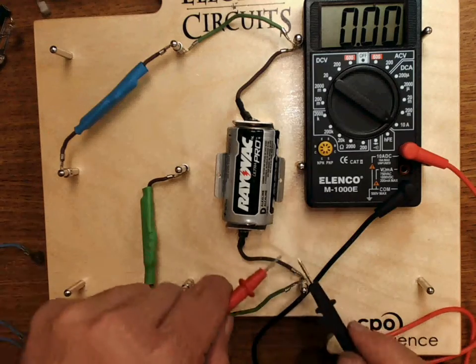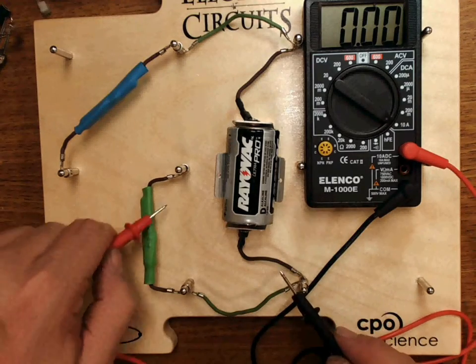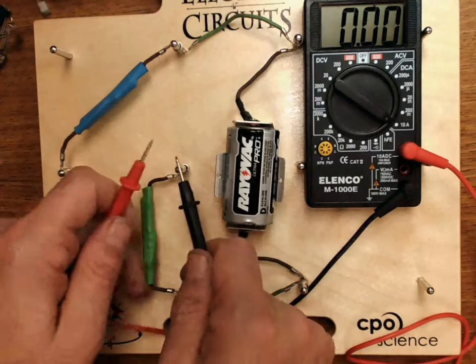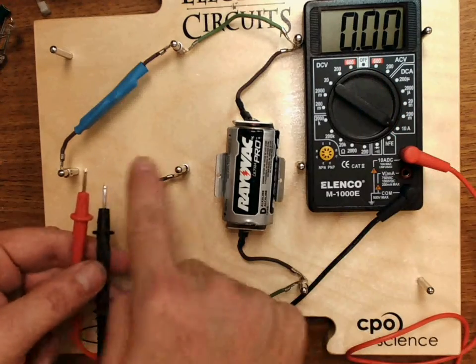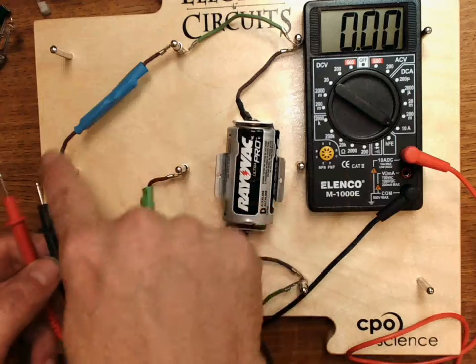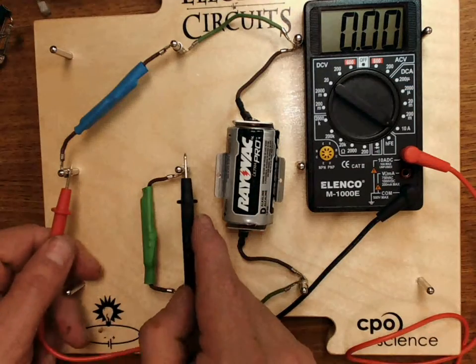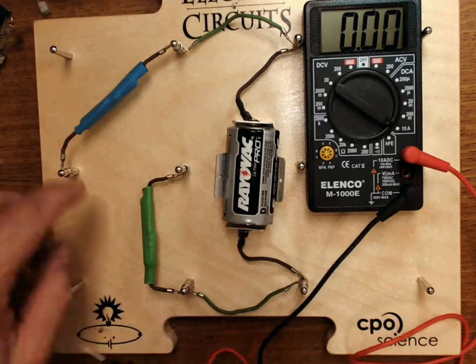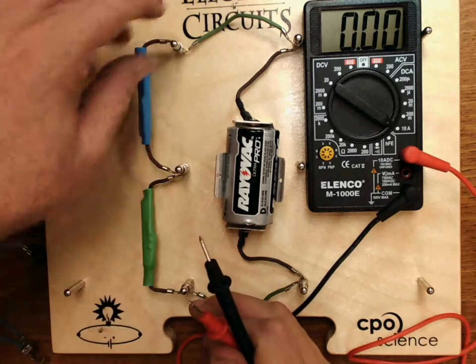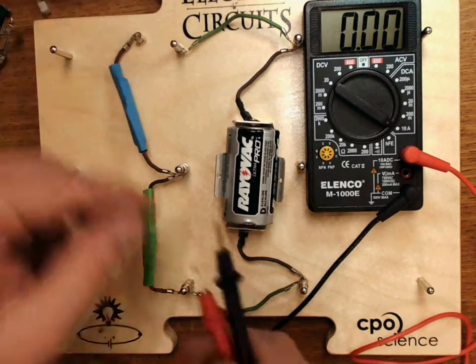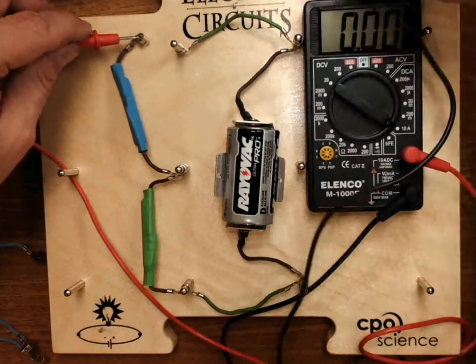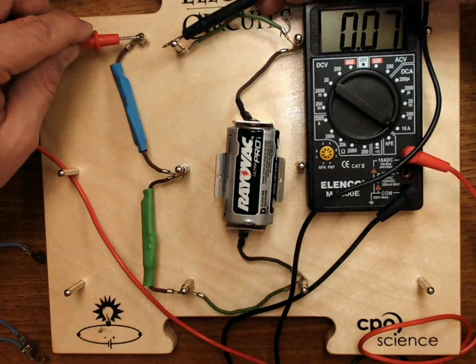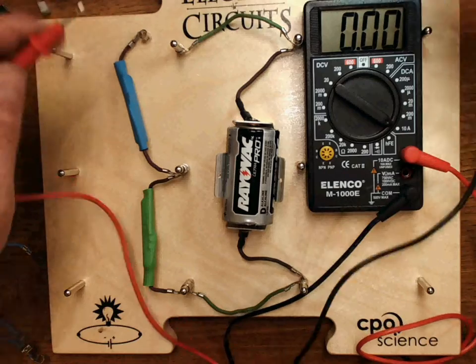The current is flowing out through the positive lead, through the green, then it must flow through the meter here in order to get to the other side and continue on. It doesn't matter where I measure, I'm still going to get 0.7, as long as I am unhooking the circuit and forcing the current to go through the meter.